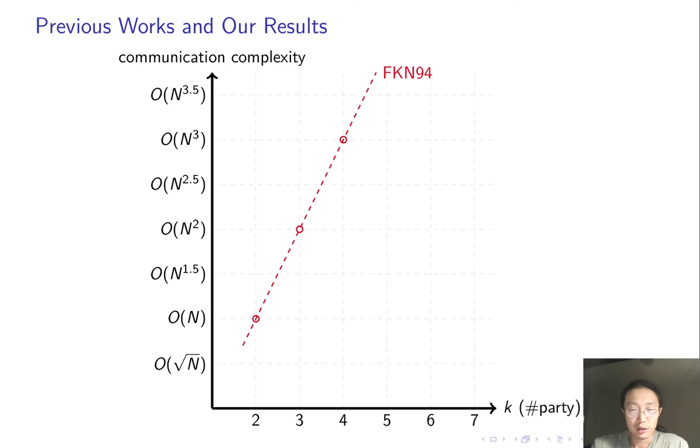To show this in picture, previously, the state of art for general k is BKN. And for smaller k, we have some more efficient ones. Our PSM matches previous works when k is small and improved state of art for larger k.